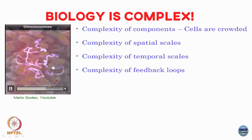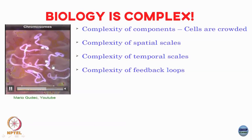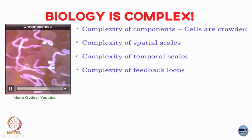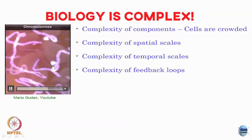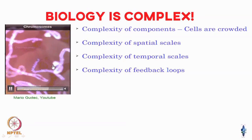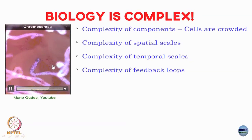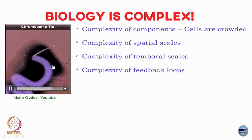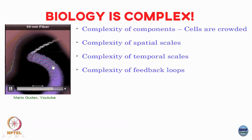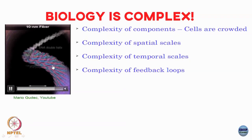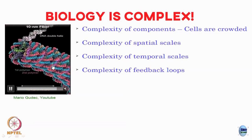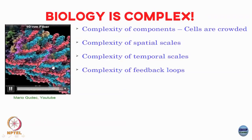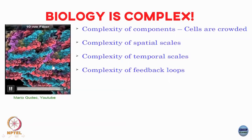Biological processes take place over various spatial scales — starting from macroscopic features like the whole organism, going down to the DNA and chromosomes. There is also a complexity of temporal scales: processes can take place in milliseconds, seconds, hours, or if you think of evolution, millions of years. The sort of modeling you would do depends on whether something is taking place very quickly or very slowly.